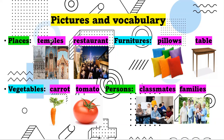Classmates are the people you see every day in your school, in the same classroom — those are your classmates. Families are your mom, dad, brother, and sister — those are your families. We call it families because it is a plural noun, and classmates also has an S.